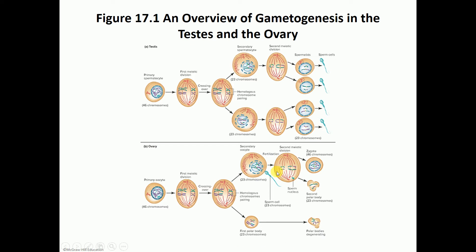If fertilization does occur, that secondary oocyte will go through the second meiotic division, and the genetic material of the sperm together with the genetic material of the egg will combine to give you the first cell known as the zygote, with 46 chromosomes. A second polar body is produced to get rid of excess genetic material. So oogenesis results in one egg, while spermatogenesis produces four sperm.